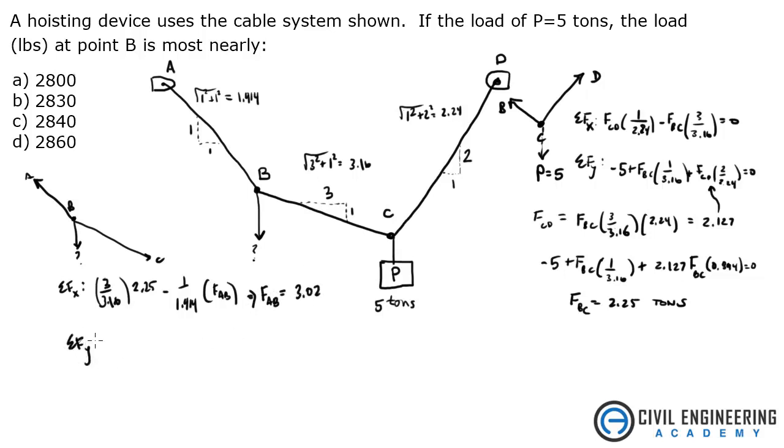Just take the sum of the forces in the y direction, and we'll get our answer. I'll just call this negative B, this unknown. So negative B plus 3.02 times 1 over 1.414 minus 2.25 times 1 over 3.16. That gives me 1.42 tons. So converting this, there's 2,000 pounds in a ton, and you're going to get 2,840 pounds.